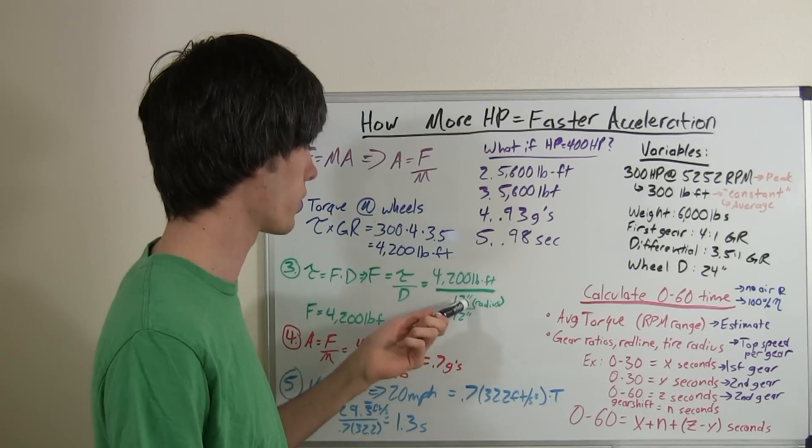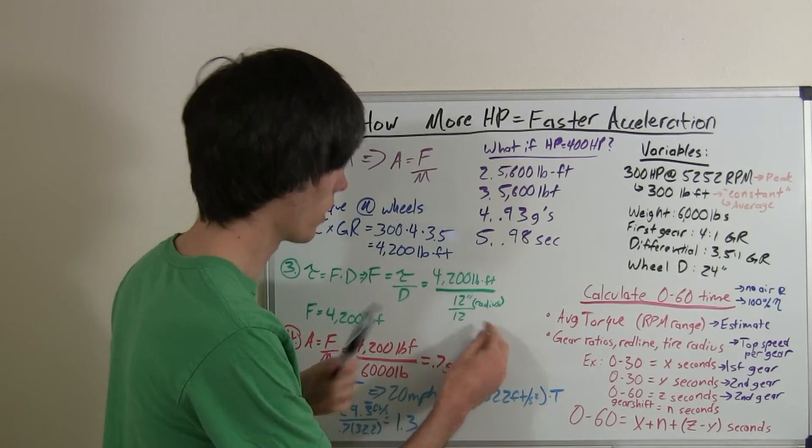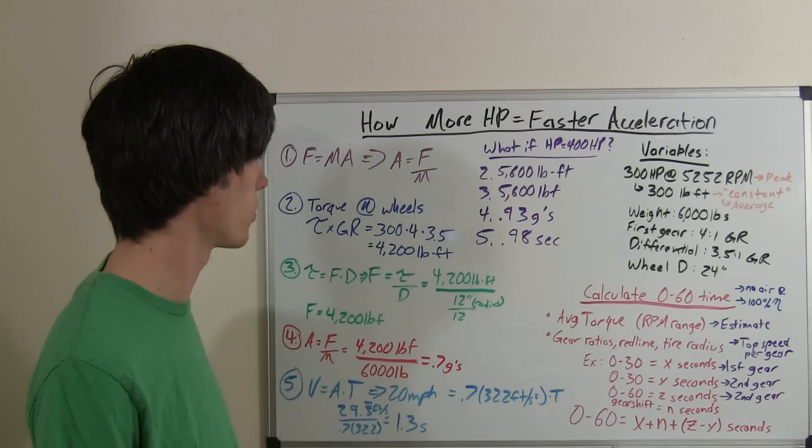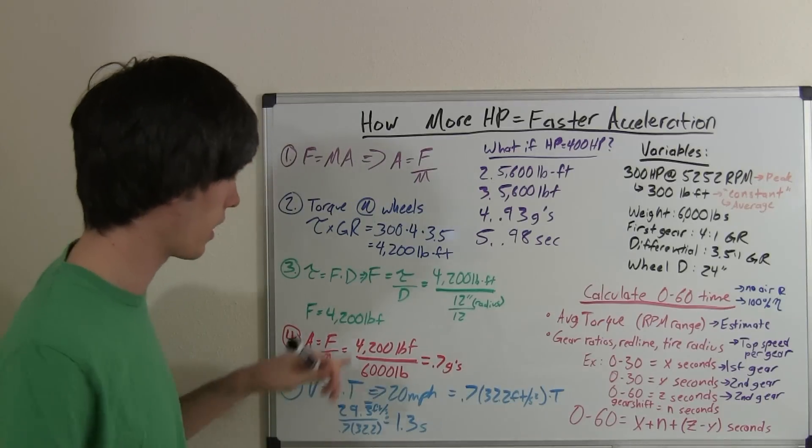So, 12 inches, we want to turn that into feet. So, we divide it by 12, not inches, just 12 inches in a foot. So, divide it by 12. And then you get 4,200 divided by 1. So, our force is 4,200 pound-force.